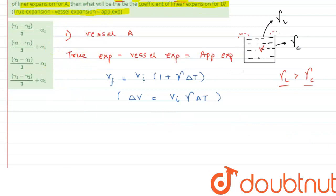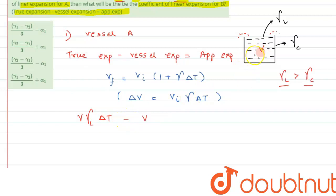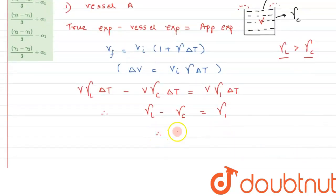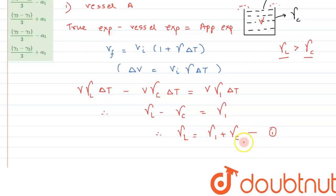Using this expression, we can write: true expansion = V × γ_liquid × ΔT. Vessel expansion = V × γ_c × ΔT. Apparent expansion = V × γ1 × ΔT. Therefore, γ_l − γ_c = γ1, which gives us γ_liquid = γ1 + γ_c. Let this be equation number one.